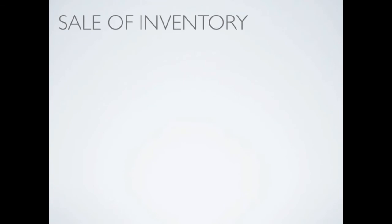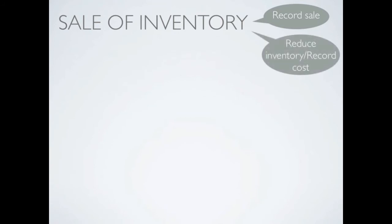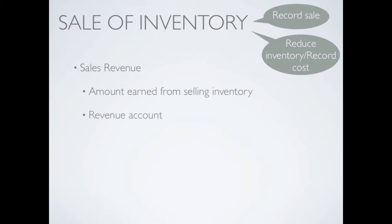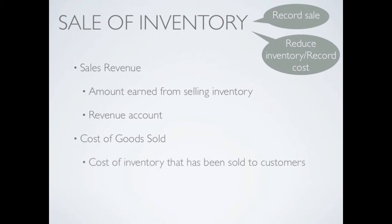When we sell inventory, we have to make two journal entries. The first one is to record the sale. The second entry is to reduce our inventory and record the cost. When we make a sale, we generate sales revenue from the selling of our inventory, and sales revenue is a revenue account. Also when we sell inventory, we have what's called cost of goods sold — the cost of that inventory that we sell. This is an expense account and it's typically the largest expense account a business will have.